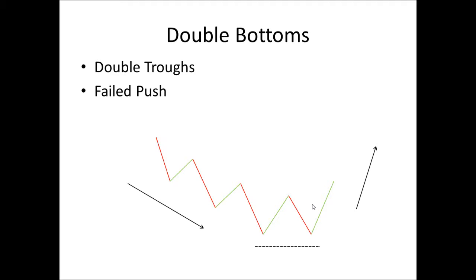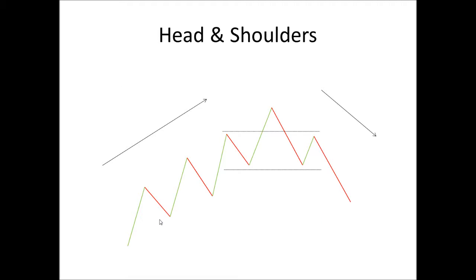This is an illustration of a head and shoulders. Once again, we have our uptrend. Price pushes, it pulls back, it pushes. We have higher highs and higher lows, everything's looking healthy. But instead of a failed push like the double top, we have a strong retracement or pullback that brings price back down to a similar level of the previous low, and we don't make a higher low, which is the characteristic of an uptrend. Price then goes for a final push, cannot make a higher high and reverses.